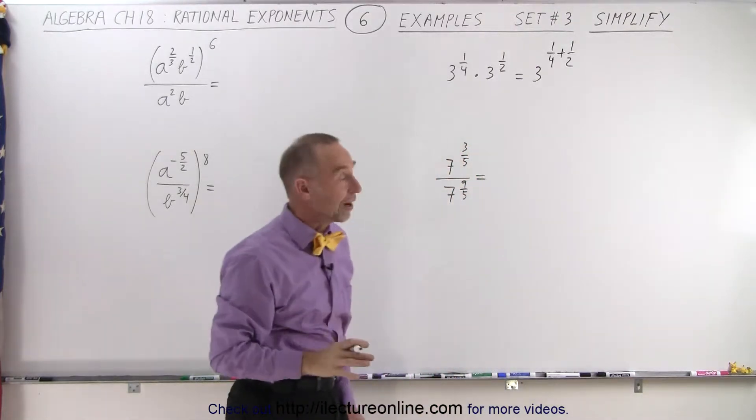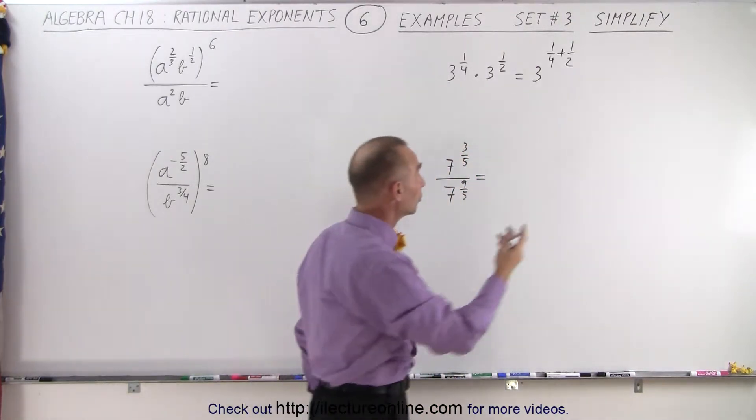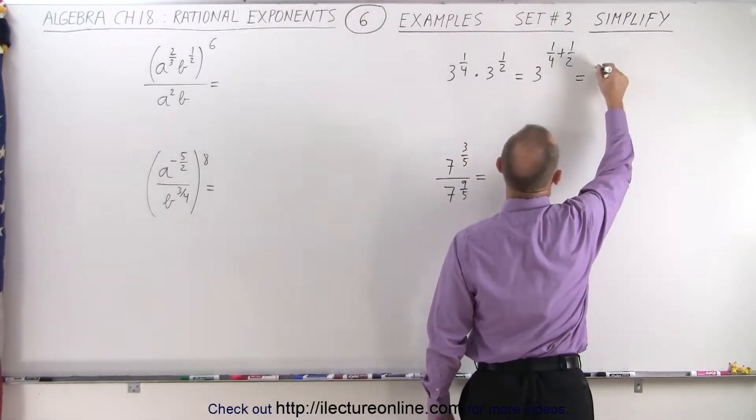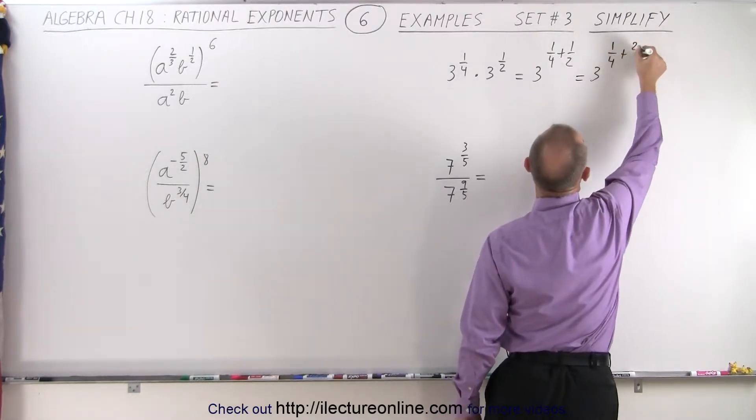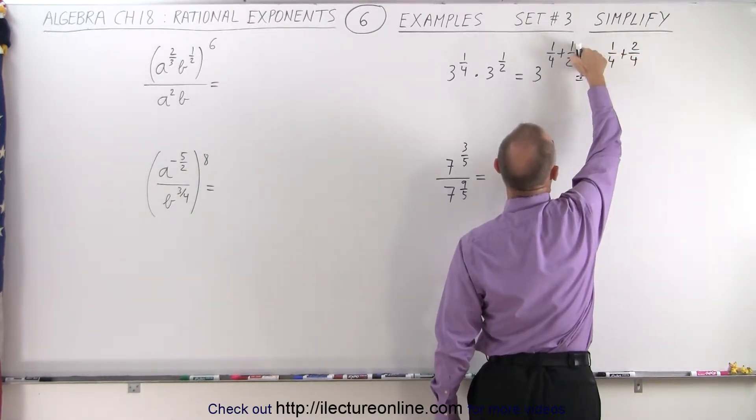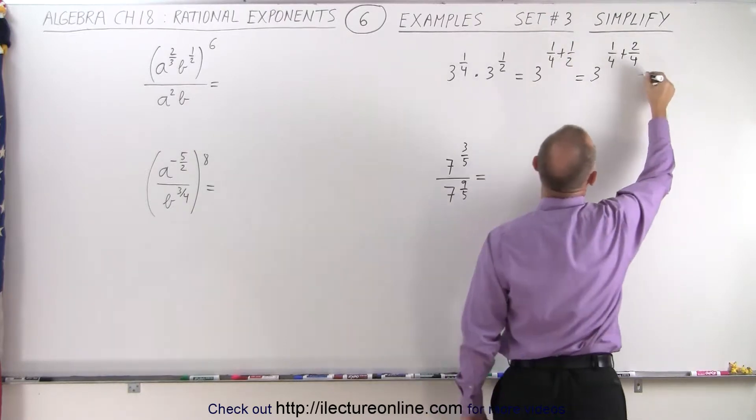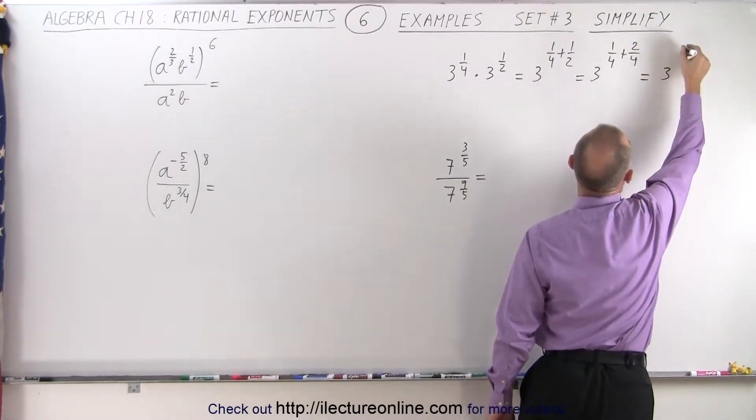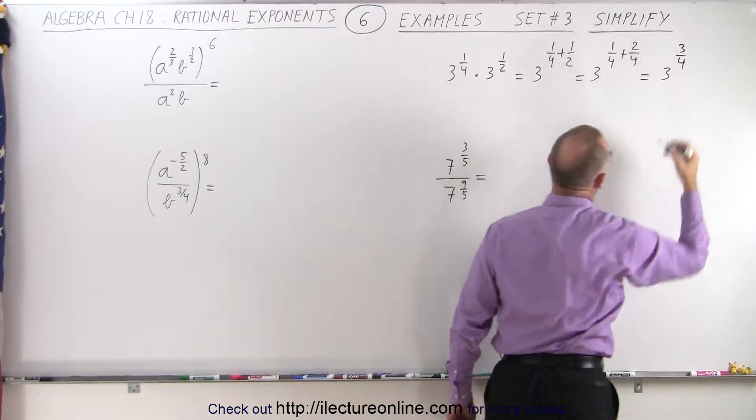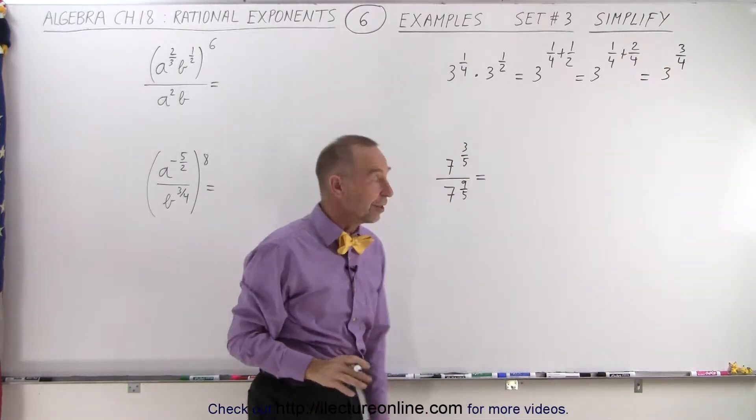Now we need to add those two fractions. We need the common denominator, which is 4. So this can be written as 3 to the 1/4 plus 2/4 by multiplying both the numerator and denominator by 2. So this can be written as 3 to the 3/4 power. And that cannot be simplified any further than that.